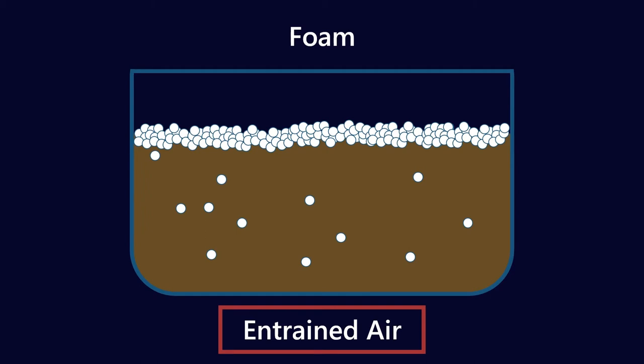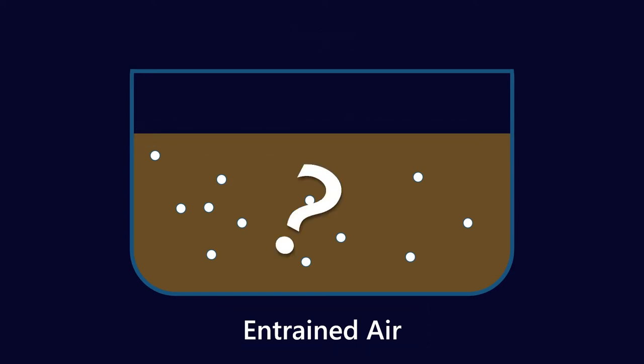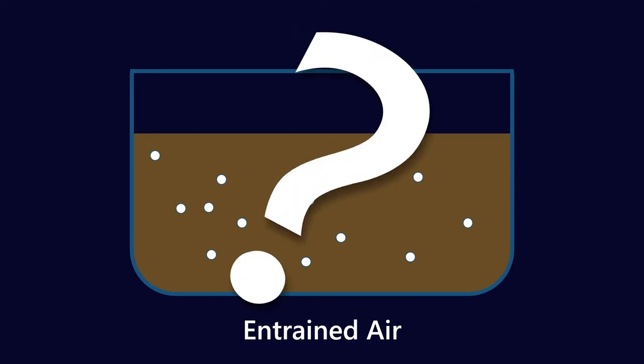Let's talk about entrained air because entrained air or significant amounts of entrained air can cause all kinds of problems. You can have cavitation, vibrations, oxidation, microdieseling, loss of pressure. All kinds of problems can result from a significant amount of entrained air. So let's talk about where entrained air comes from.